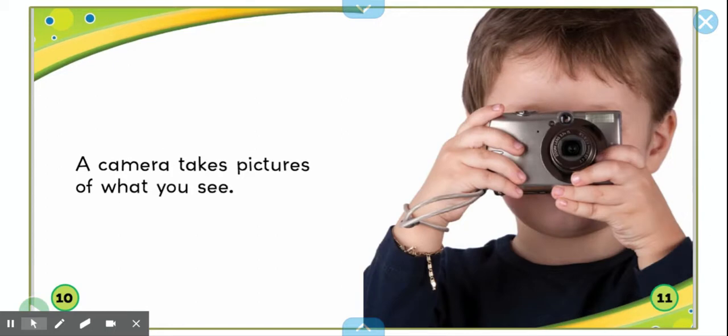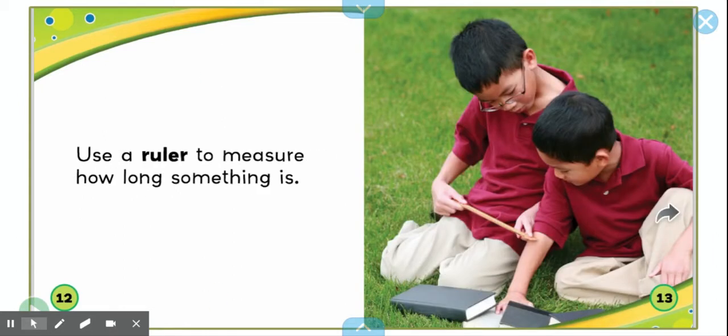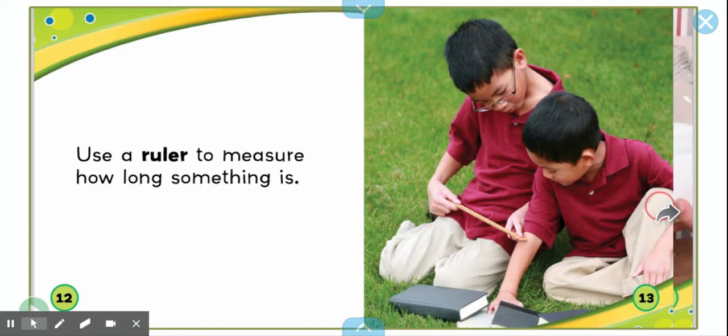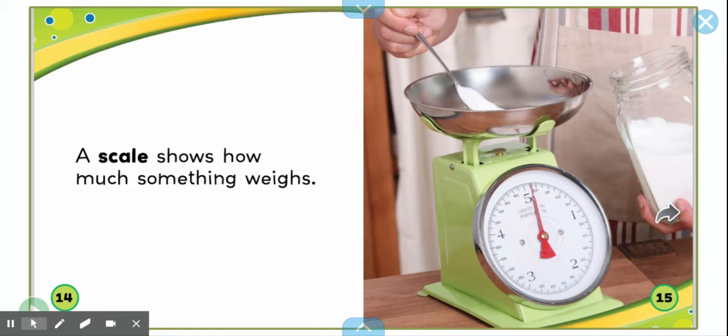A camera takes pictures of what you see. Use a ruler to measure how long something is. A scale shows how much something weighs.